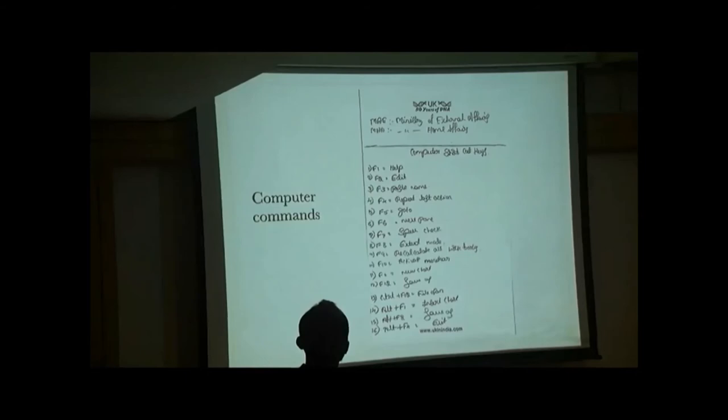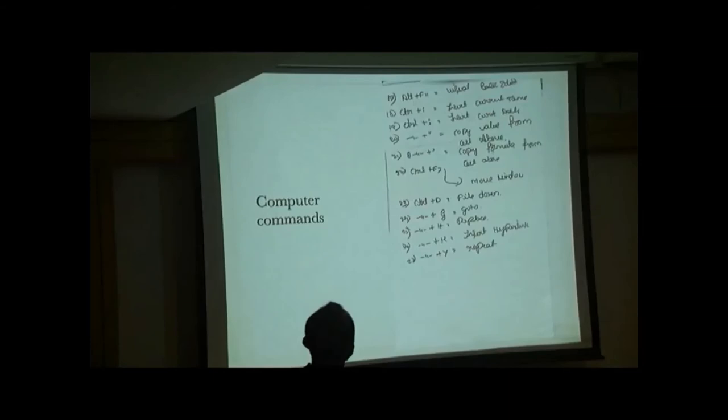Shift F1. Help. Shift F2. Edit. Shift F3. Paste name. Shift F4. Repeat last time. Shift F5. Go to. Shift F7. Spell check. Shift F8. X10. Activate number. Shift F11. Save up. Control S. File open. Alt Shift F1. Insert chart. Save as. Alt Shift F4. Exit. Control I. Insert current time. Insert current date. Control double quote. Copy value from cell above. Copy formula from cell above. Control Shift F7. Move window. Control D. File down. Control Z. Go to. Replace. Insert hyperlink. Control Y. Repeat.